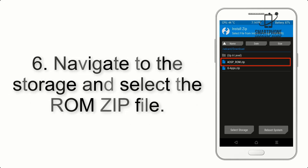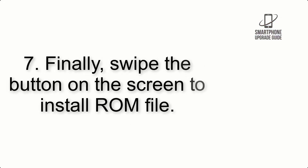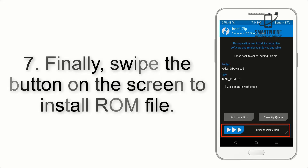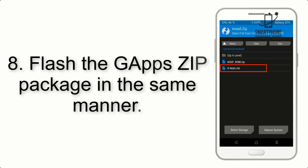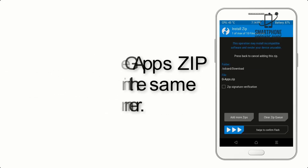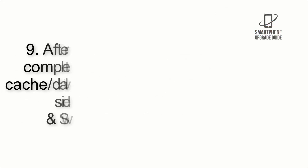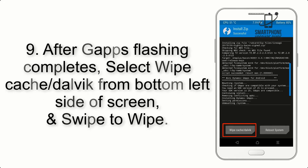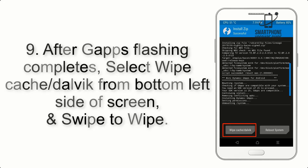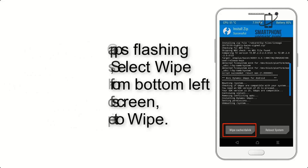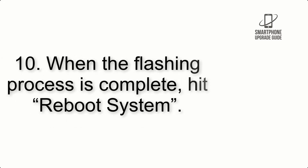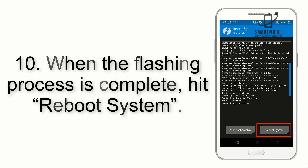Step 6: Navigate to the storage and select the ROM zip file. Step 7: Swipe the button on the screen to install the ROM file. Step 8: Flash the GApps zip package in the same manner. Step 9: After GApps flashing completes, select Wipe Cache and Dalvik from the bottom left side of the screen and swipe to wipe.